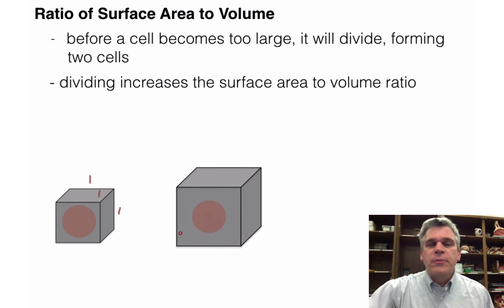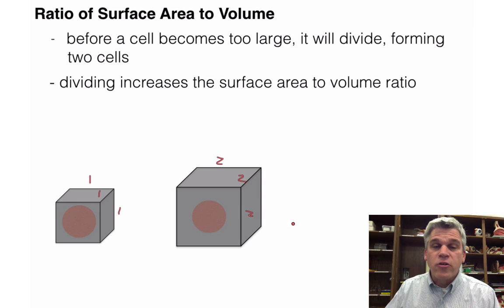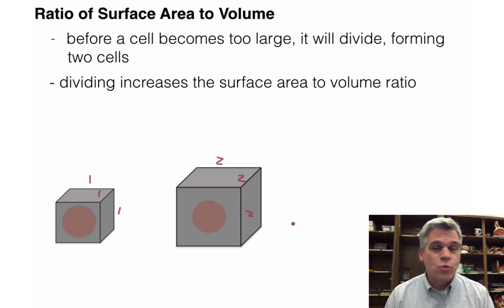Let's take a look at a little bit larger cell. Let's say that this was 2 centimeters on each side. So if we take a look at the volume, it's 2 times 2 times 2, which 2 times 2 is 4 times 2 is 8. If we look at the surface area, 2 times 2 is 4 times 6. The number of sides is 24.